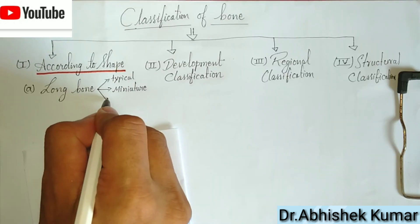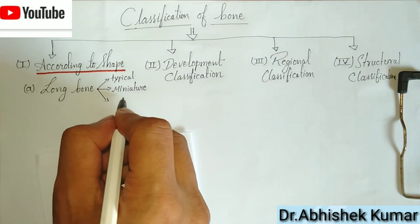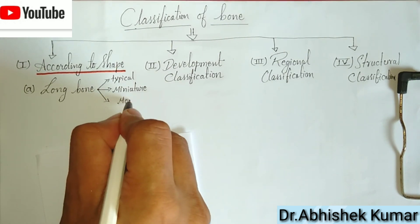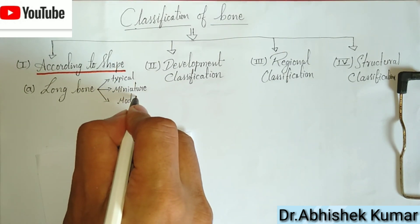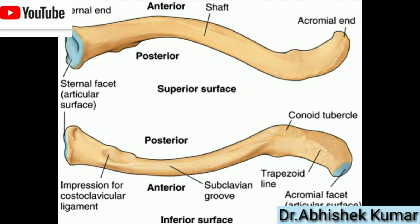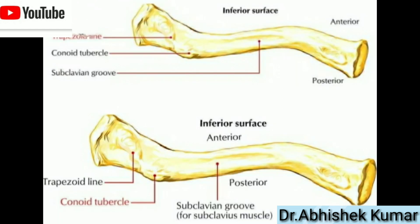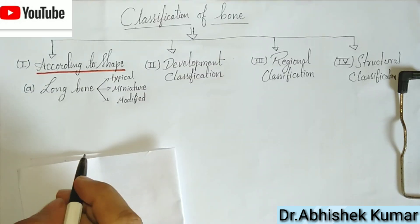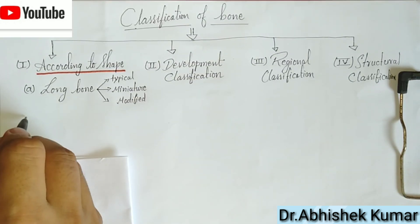Then the modified long bone. Modified long bones have no medullary cavity, like the clavicle. You can see pictures of the clavicle on the screen.